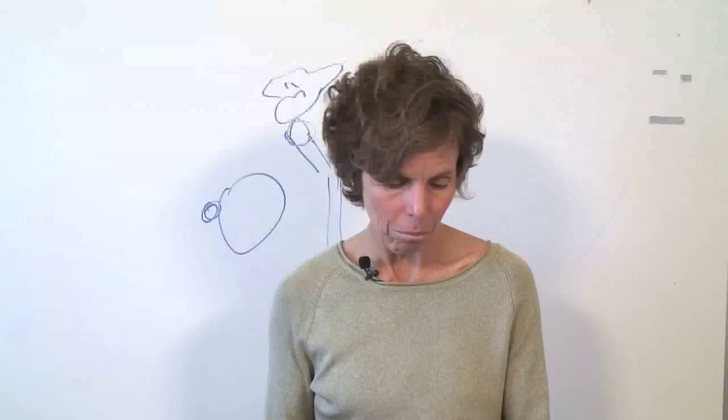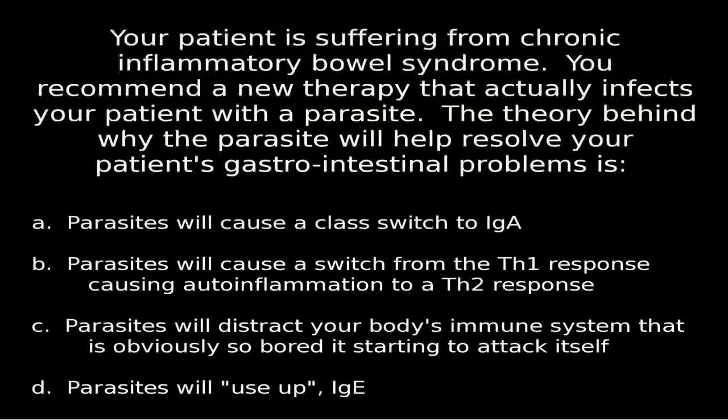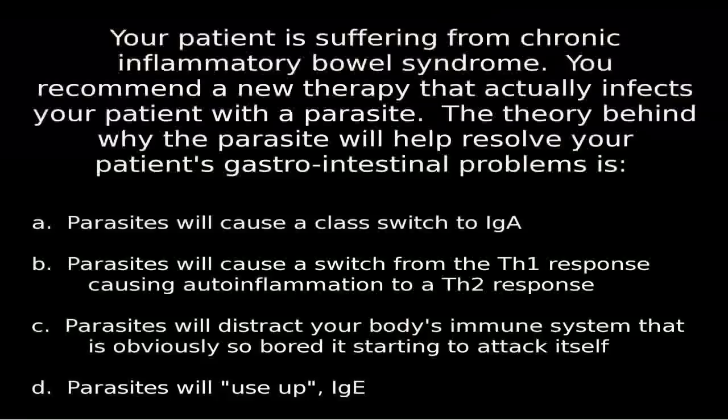Question four: your patient is suffering from a chronic inflammatory bowel condition — that's too much immunity. You recommend a new therapy that intentionally infects your patient with a parasite. The theory behind why infecting your patient with a parasite would help resolve the gastrointestinal problems is essentially a cytokine question.